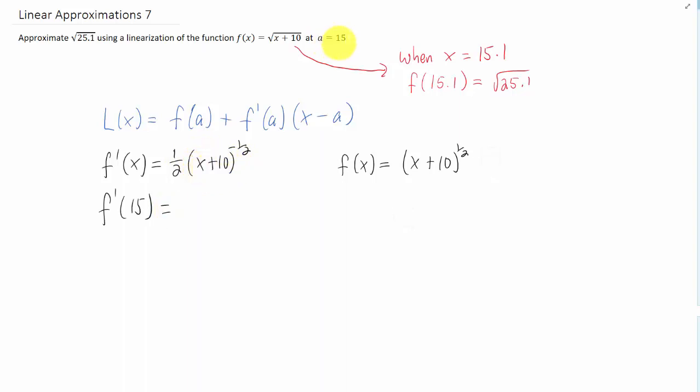So let's plug in the given a value and simplify this. The negative power here says we have to bring this term down to the denominator. Obviously, 15 plus 10 is 25. So we can write it like this. 25 to the 1 half power is just the square root of 25, which is 5, and we get 1 tenth.